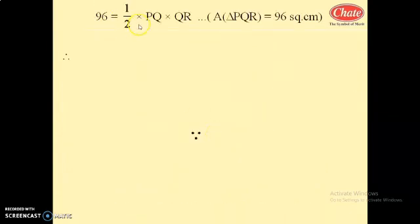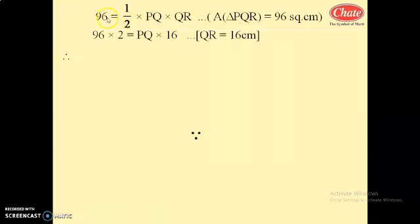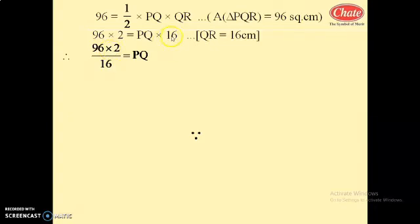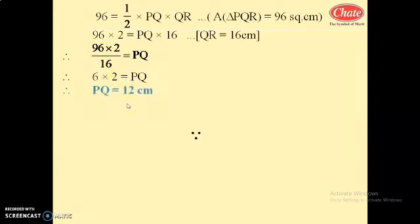So 96 equals half of PQ into QR. Transferring 2 to the left side: 96 into 2 equals PQ into 16, since QR is 16 centimeters. Transferring 16 to the left: PQ equals 96 into 2 divided by 16. So PQ equals 12 centimeters.